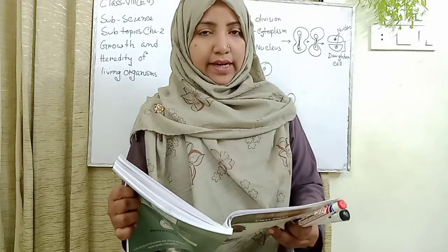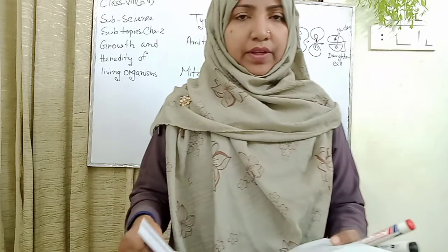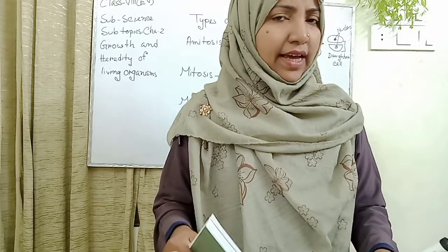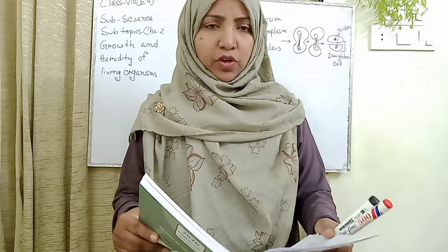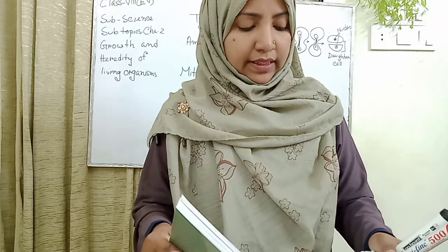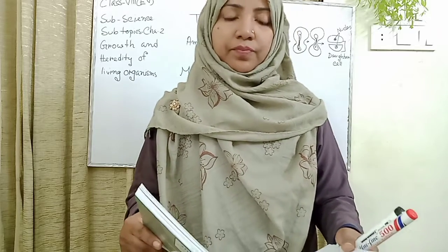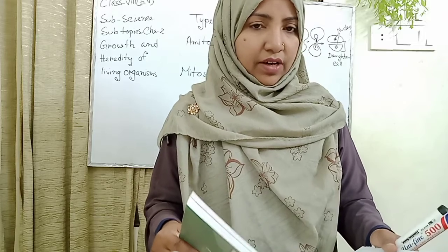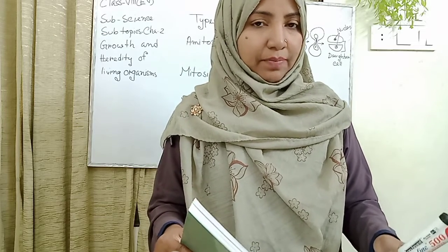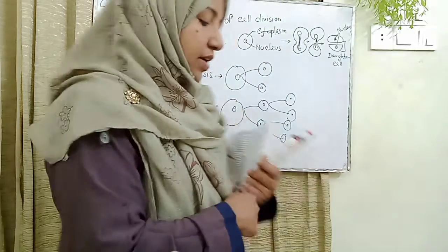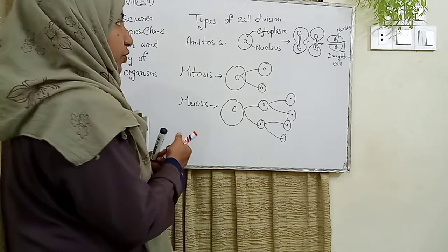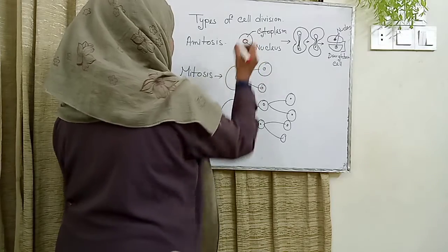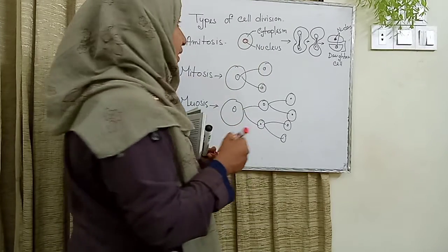Today I will explain the types of cell division. Lesson one: the types of cell division in living organisms. Three main types of cell divisions are found: amitosis, mitosis, and meiosis. Now, for amitosis, I will draw the first structure. There is the nucleus in the middle part and the surrounding cytoplasm.